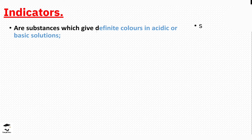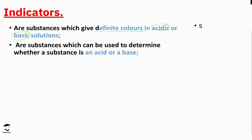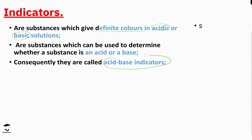Next we are going to talk about indicators. Indicators are substances that give a definite color in acidic or basic solutions. They tell us whether something is acidic or basic. When you put them in an acid they give you a specific color, and when you put them in a base they give you a different specific color — that distinction tells us whether something is an acid or a base.